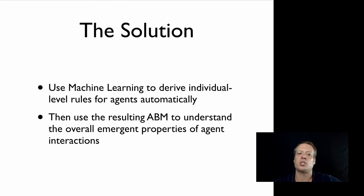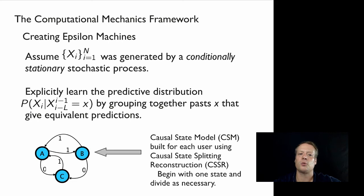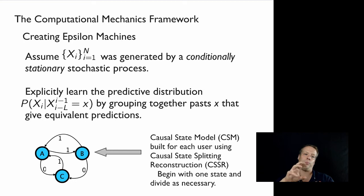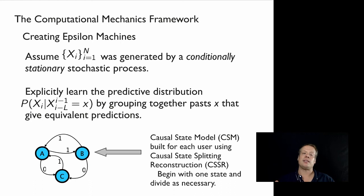Our solution was to use machine learning to derive individual-level rules for the agents automatically, then use the resulting ABM to understand the overall emergent properties of the behavior. The particular framework we decided to use was one that comes out of the Santa Fe Institute — work done by Jim Crutchfield, Cosmo Shalizi, and a number of others on creating Epsilon machines. Epsilon machines, also called causal state models, are state machines where you group together statistically similar paths that give the same future.